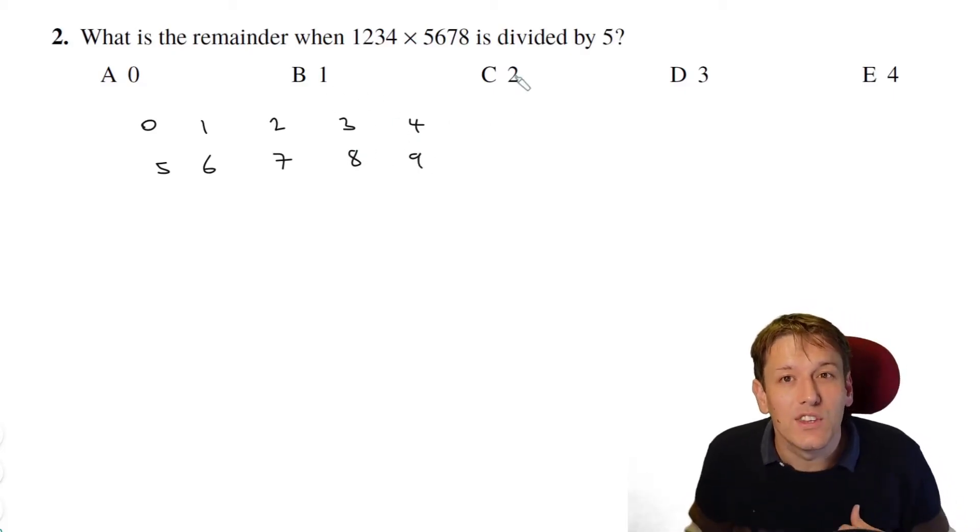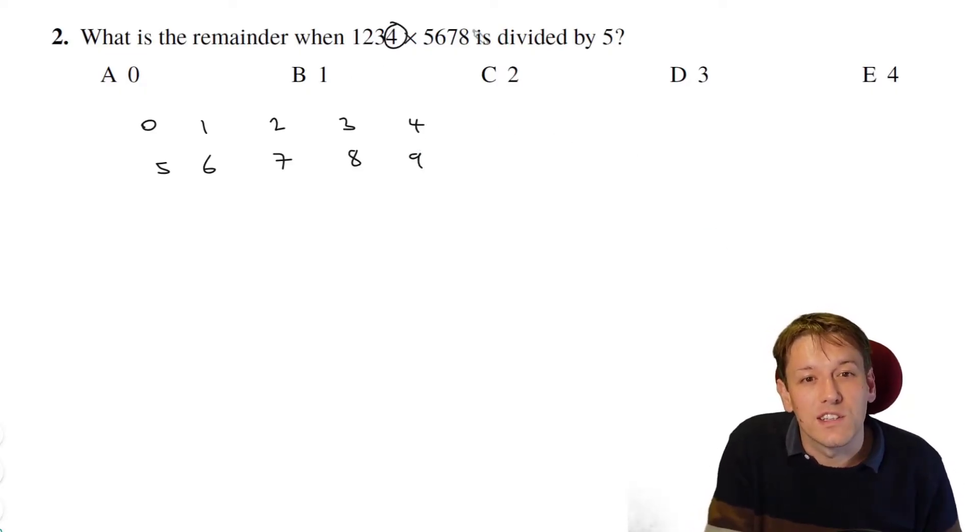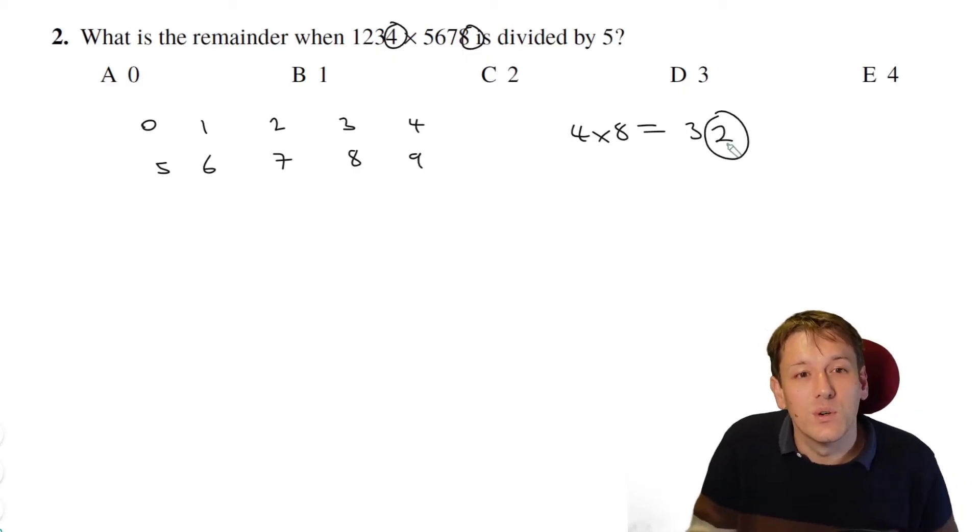So actually here, all I need to do is look at the 4 and the 8, and say 4 times 8 is 32. The last digit of that number is 2, and so the remainder when we divide this product by 5 will be 2, because the last digit of the product will be 2. And then we're done.